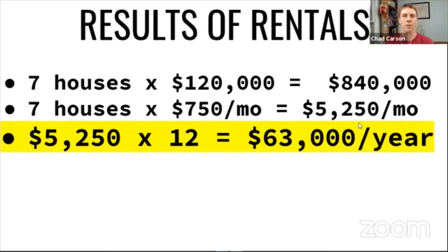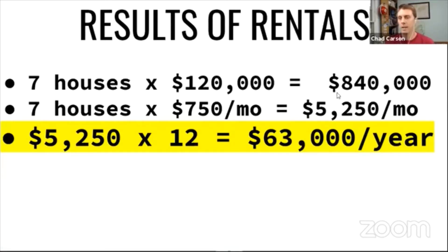Here's what those numbers look like on this simple goal. Seven houses times $120,000 — over the years, between purchase price, down payment, and paying off the debt, you had to come up with $840,000 in principal to buy all those properties and pay them off.